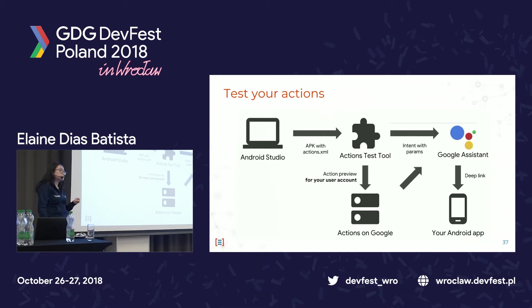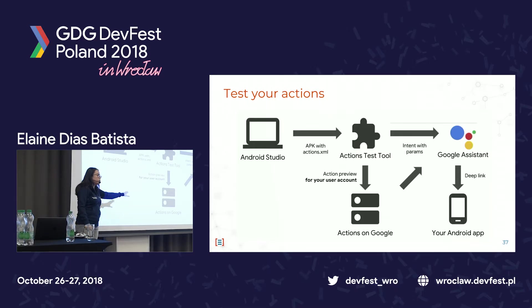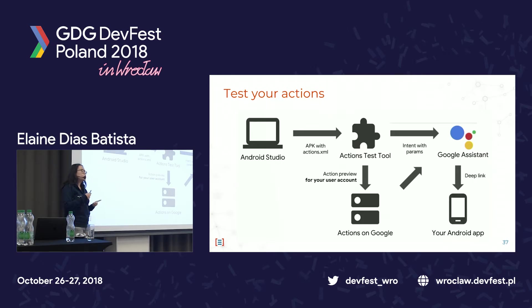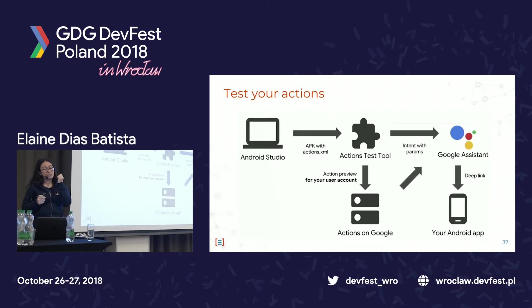In Android Studio there's the Action Test Tool where you can preview your action with your developer account. The way it works is that on the Actions on Google portal you log in with your developer email, and if on your phone you're logged in with the same account, you'll be able to test it. You can test it before publishing — and you definitely should.